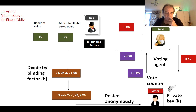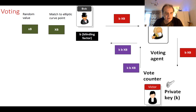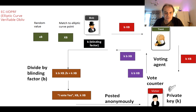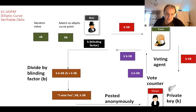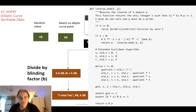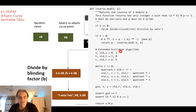Victor takes X_b and multiplies by k, his private key. If it equals the value Bob sent, Victor knows the vote came from a legitimate registered voter — because only Bob would have known the blinding factor. Crucially, Victor cannot tell who actually voted, only that someone voted correctly. The vote is posted anonymously. To perform the division with elliptic curves, we use the inverse mod method with the extended Euclidean algorithm, dividing mod p.